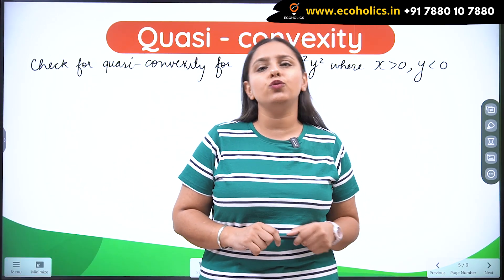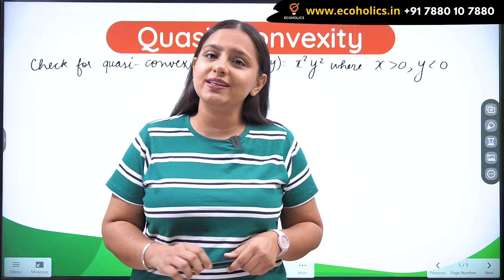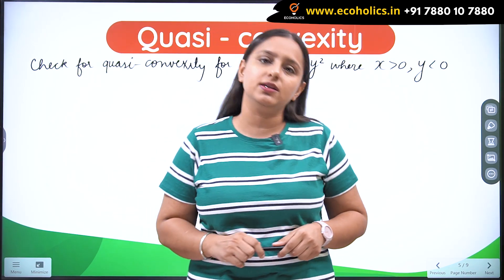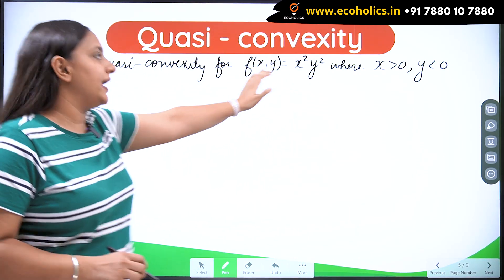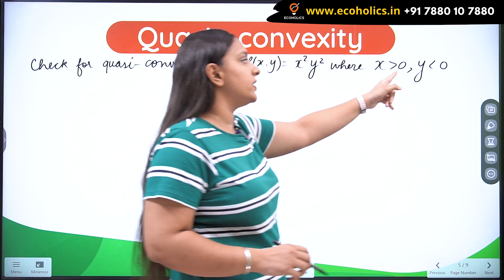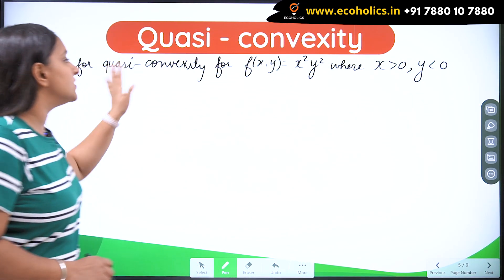I have already done two videos on the concept of quasi-convexity. If you wish to see those videos, please go to the link in the description box below. Alright, so the function given to us is x square y square where x is strictly positive and y is strictly negative and we have to check for quasi-convexity.